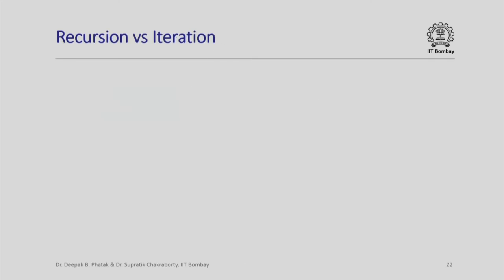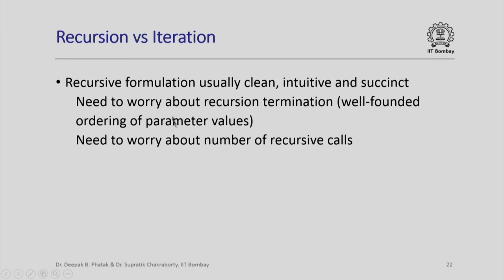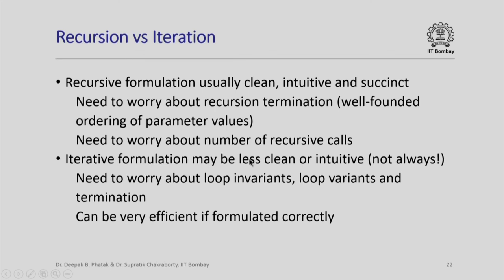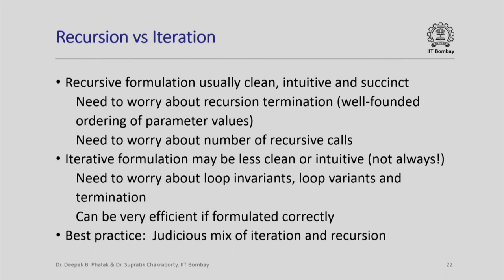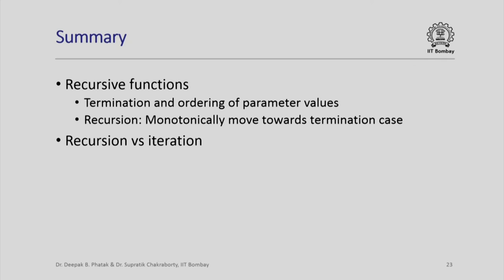Now that we have seen the same solution using recursion and iteration, which is better? The recursive formulation is usually clean, intuitive, and succinct, but you have to worry about recursion termination, well-founded ordering of parameter values, and the number of recursive calls. The iterative formulation may be less intuitive, but you need to worry about loop invariance, loop variance, and termination of the loop, and if formulated properly it can be very efficient. The best practice is to use a judicious mix of iteration and recursion. In summary: we looked at recursive functions, termination, ordering of parameter values, how recursive calls should monotonically move toward the termination case, and a brief comparison of recursion versus iteration.